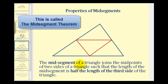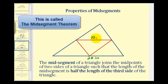Next, the mid-segment of a triangle joins the midpoints of two sides of a triangle such that the length of the mid-segment is half the length of the third side of the triangle. So for example, if the length of this side of the triangle was twenty inches, the length of the parallel mid-segment would be ten inches. And it also follows that if the length of this mid-segment was eight inches, then the parallel side of the triangle would be twice that length.